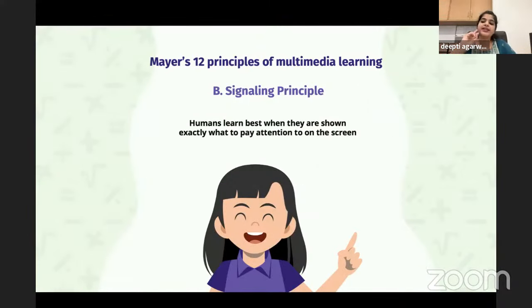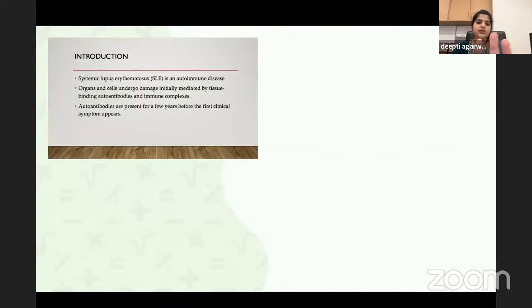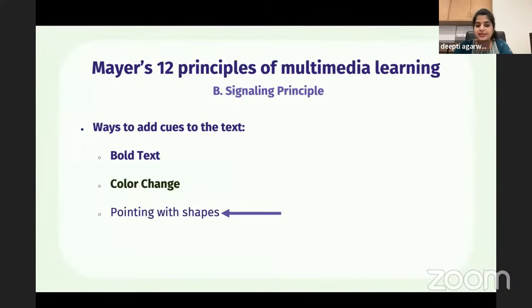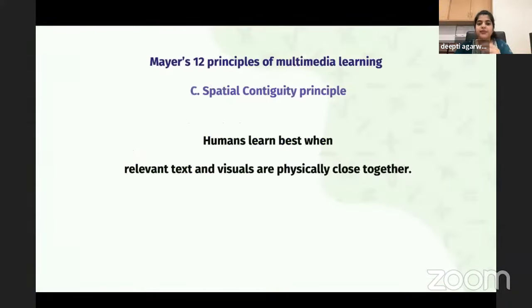The second is the Signaling Principle — humans learn best when shown exactly what to pay attention to on the screen. For example, a slide with bold words makes your eyes automatically focus on the key carry-home message. You can attract attention by making text bold, changing the color, or pointing with shapes like an arrow or a star. This is called the Signaling Principle.